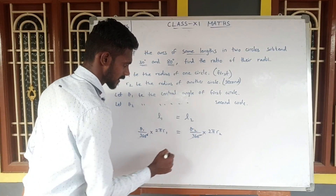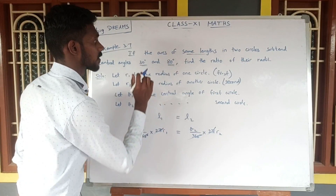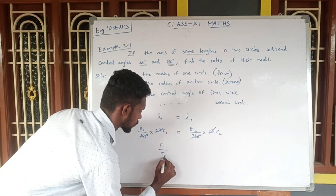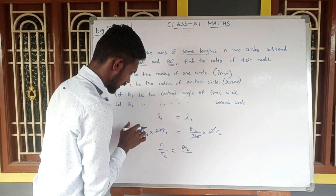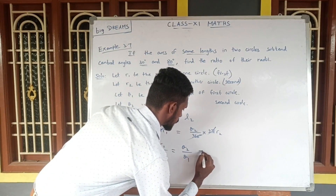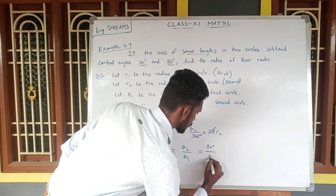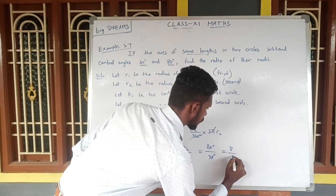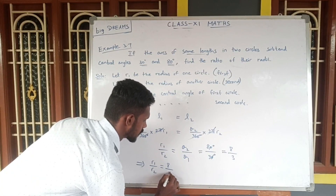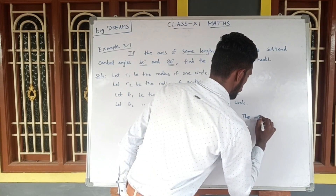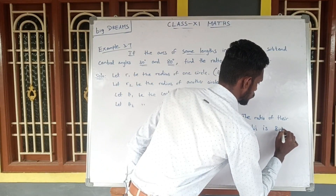The 360 degrees cancel on both sides, and 2 pi cancels as well. So we have theta1 times R1 equals theta2 times R2. To find the ratio of radii, R1 by R2 equals theta2 by theta1. Substituting — theta2 is 80 degrees, theta1 is 30 degrees — the zeros cancel, giving R1 to R2 equals 8 to 3. So the ratio of their radii is 8 is to 3.